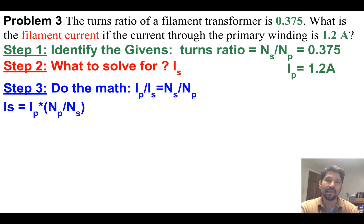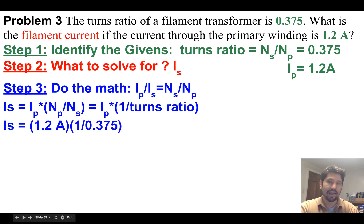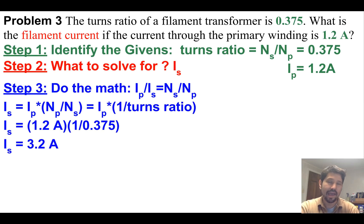To get IS alone I've got to flip the turns ratio. So IS equals IP times one over the turns ratio, because I've got P over S not S over P. IS equals 1.2 amps times one over that turns ratio of 0.375, and it turns out to be 3.2 amps.